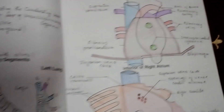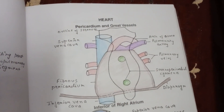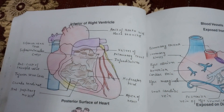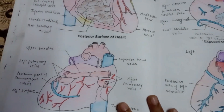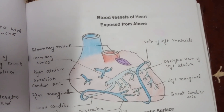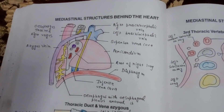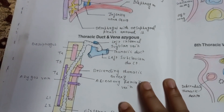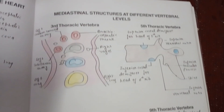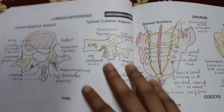Now here comes the heart, pericardium, and your great vessels. This is the interior of your right atrium, this is the interior of right ventricle, and this is the posterior surface of your heart. The blood vessels of the heart — exposed from above and exposed on the diaphragmatic surface. After that, this is the mediastinal structures behind the heart, and this is the thoracic duct and vena azygos.